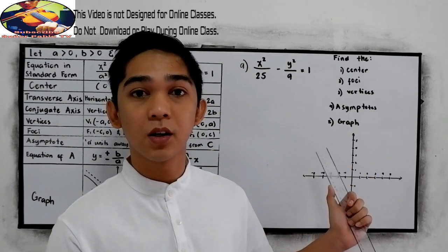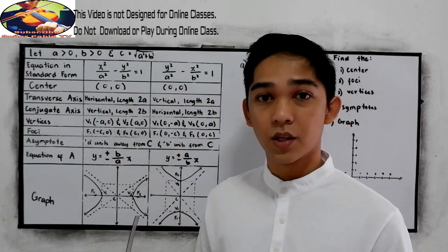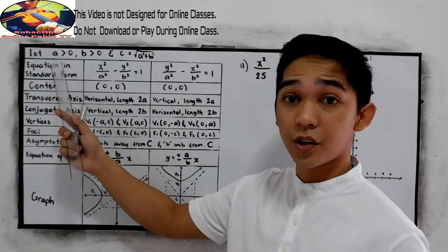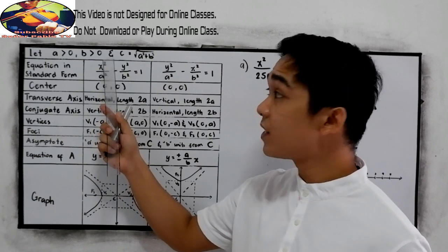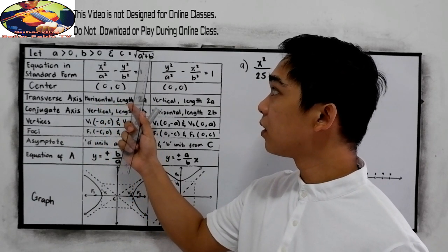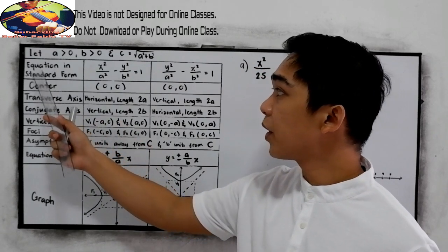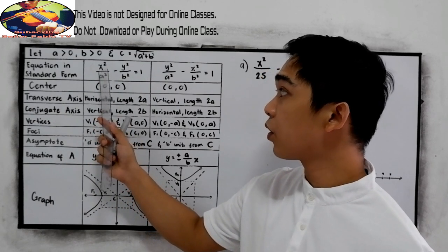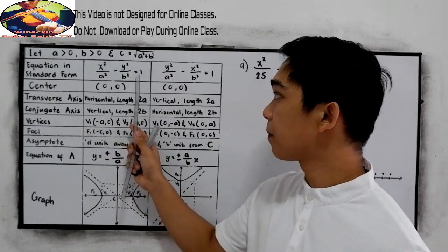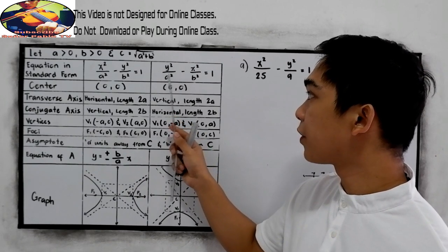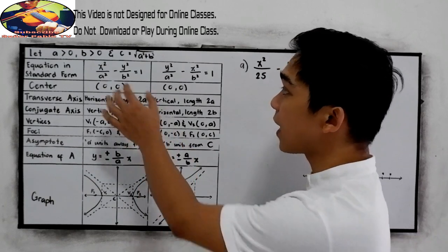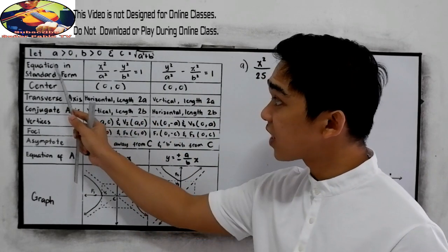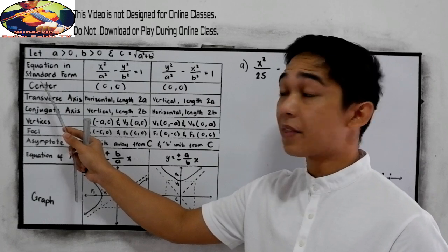Before we solve our first example, these are the things you need to know about the hyperbola. Let us discuss our table. Let A be greater than 0 and B greater than 0, and C is equal to the square root of A squared plus B squared. The standard form equations are: x squared over A squared minus y squared over B squared equals 1, and y squared over A squared minus x squared over B squared equals 1 — notice that x and y are interchanged. If you encounter this kind of equation, our center is automatically (0, 0).